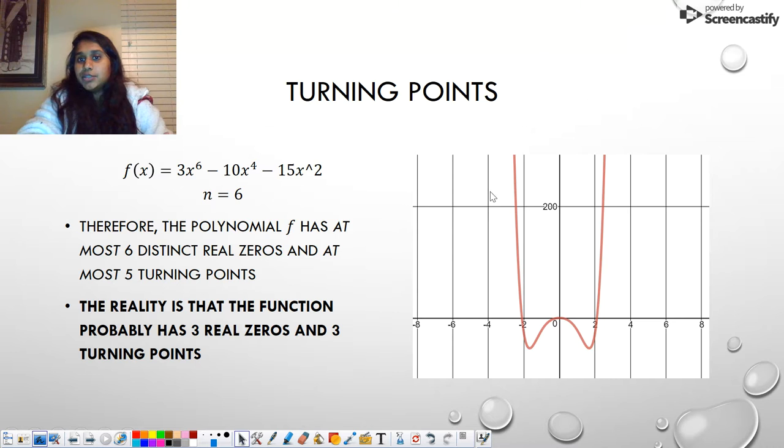But the reality is I plugged it into a graph and I showed it to you here. The reality is that this function probably has 3 real zeros. I see a connection point right here, a connection point right here, a connection point right here and 3 turning points. Boom, there's a turning point. Boom, there's a turning point and boom, there's a turning point.